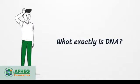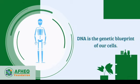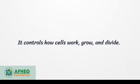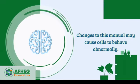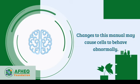What exactly is DNA? DNA is the genetic blueprint of our cells. It controls how cells work, grow, and divide. Changes to this blueprint may cause cells to behave abnormally.